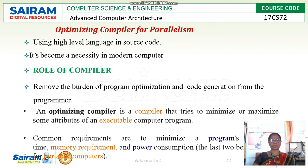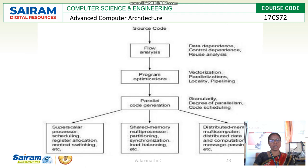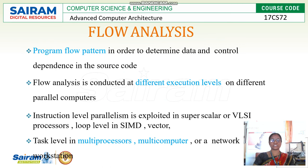The next topic is optimization compiler for parallelism. A compiler converts high-level languages into lower-level source code. The compiler removes the burden of program optimization and code generation from the programmer. An optimizing compiler tries to minimize or maximize some attributes of an executable computer program. There are three phases: flow analysis, program optimization, and parallel code generation.